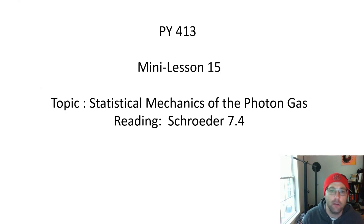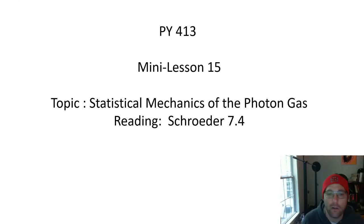Welcome to mini lesson 15. In this lesson we're going to talk about the statistical mechanics of the photon gas, which is eventually how we're going to explain the shape of the blackbody radiation spectrum that we reviewed in the last mini lesson. We're still in chapter 7, doing section 7.4 of Schroeder.